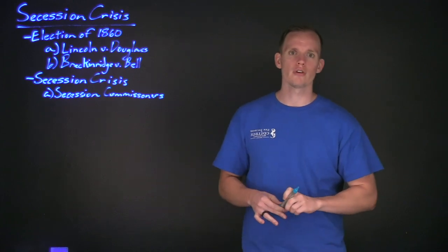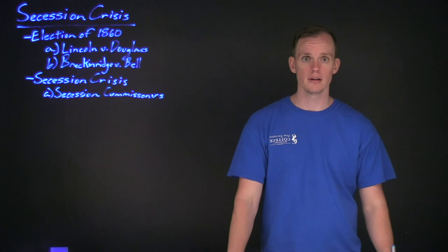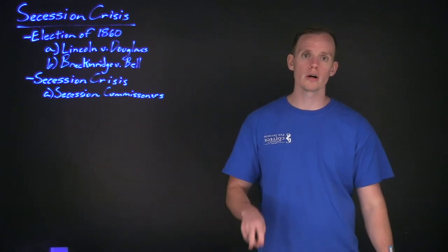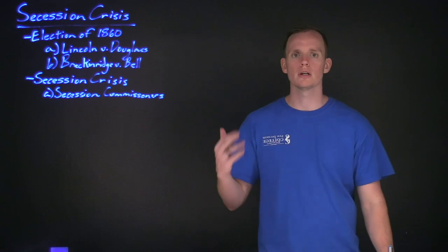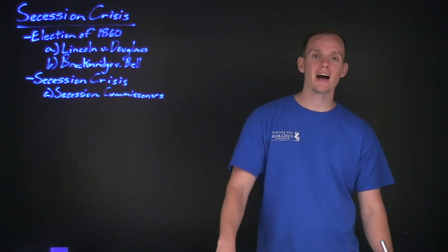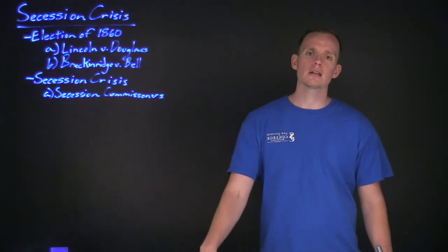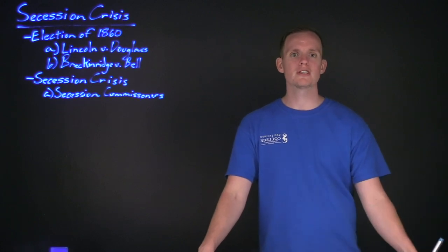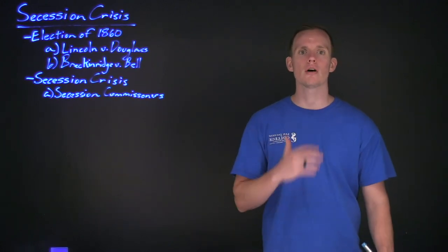One by one, by February 1st of 1861, there would be six other southern states that would join South Carolina. The states of Georgia, Florida, Louisiana, Alabama, Mississippi, and Texas would all join South Carolina by February 1st. Three days after the last of the seven states agreed to this, several delegates would be sent off to a convention that was meeting in Montgomery, Alabama to establish a new government.